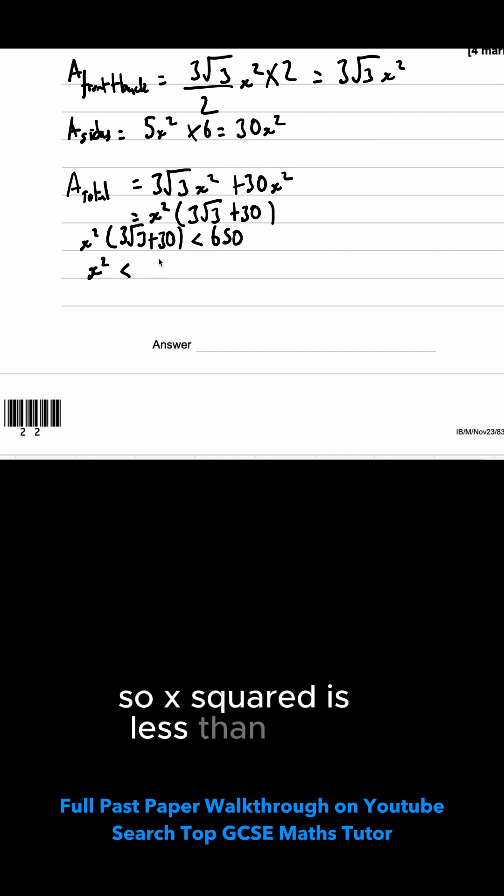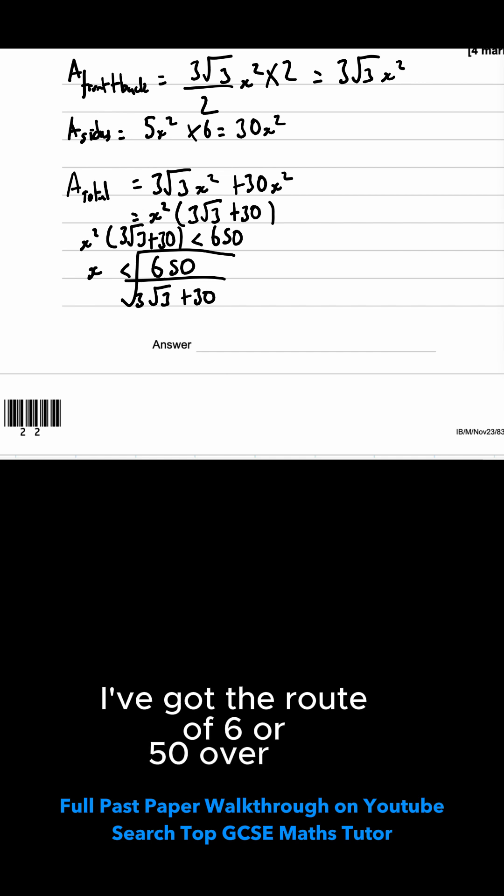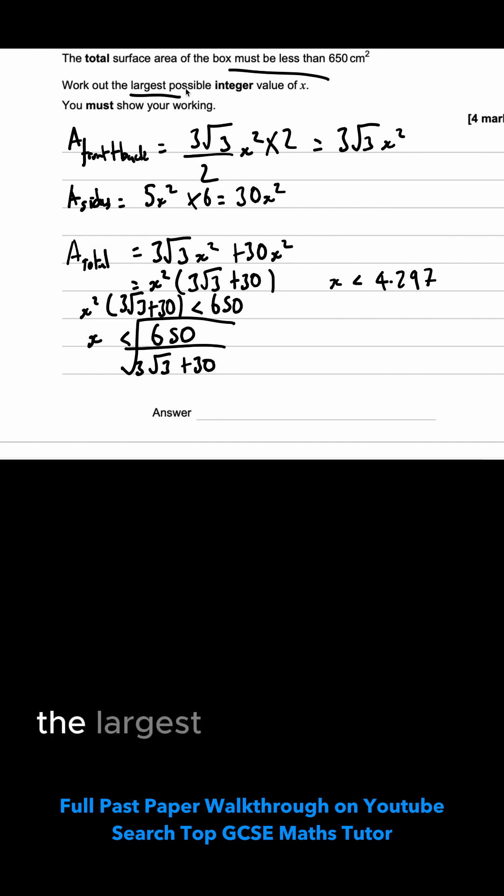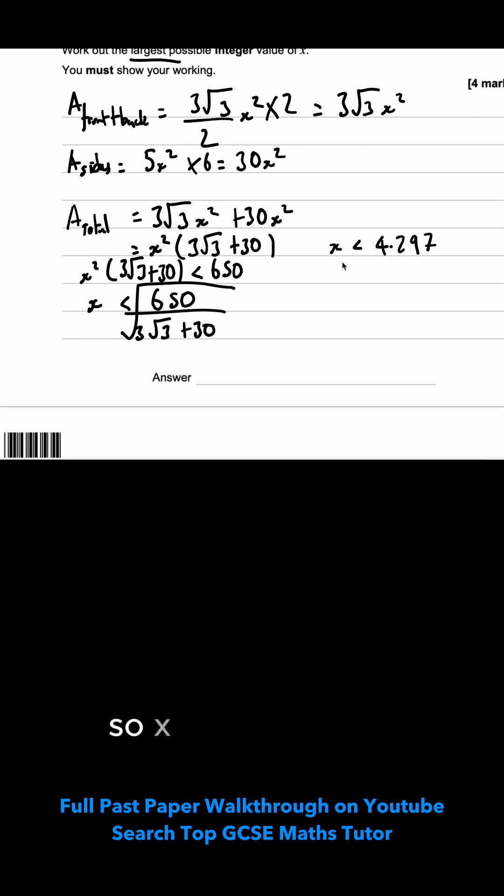So x squared is less than 650 over 3 root 3 plus 30. Because the left hand side is being squared, to get rid of that, I just need to square root both sides. Just type all of this into the calculator. So I've got the root of 650 over 30 plus 3 root 3. That gives me 4.297. So x is less than 4.297. We're trying to work out the largest possible value that it could be. So x would have to be 4.